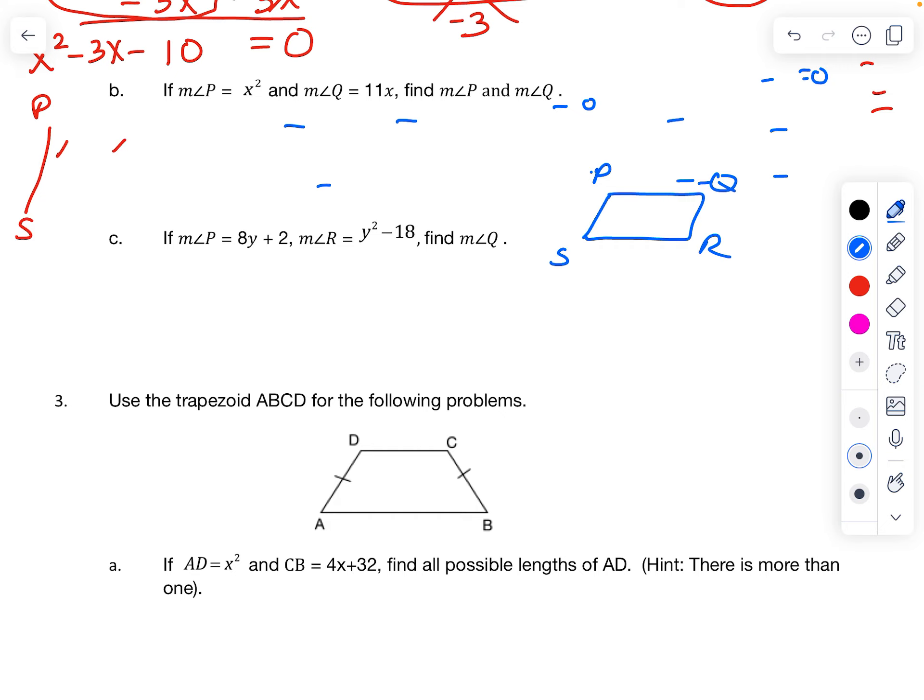P is, we're talking about the angle, so the inside, 8y plus 2. R is over here, y squared minus 18. Notice these two angles are diagonal from each other. So what do we know about angles diagonal on a parallelogram? They are equal, so these two, we want to set them equal to each other.